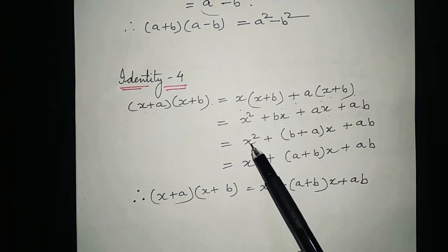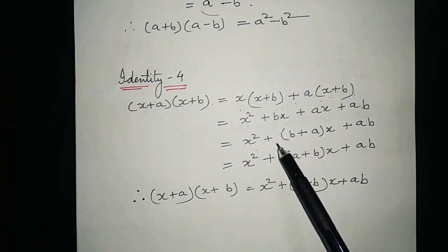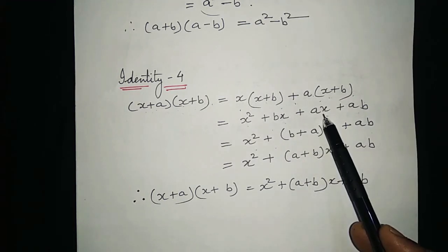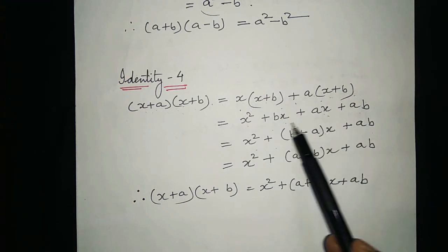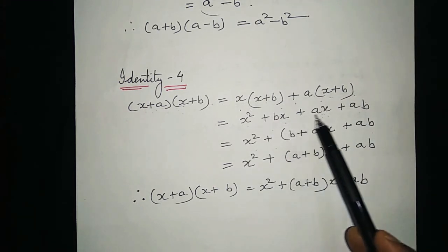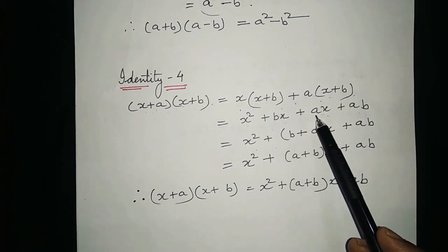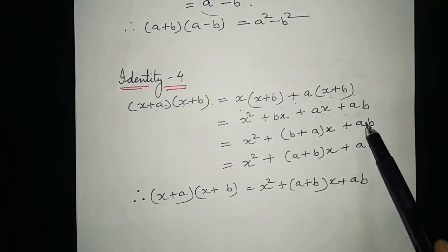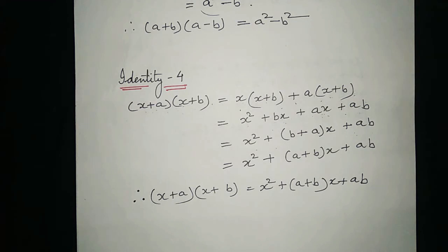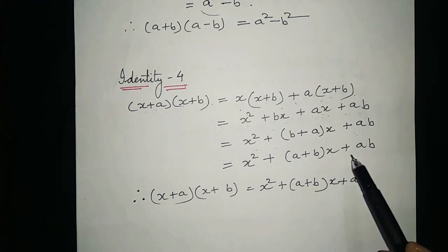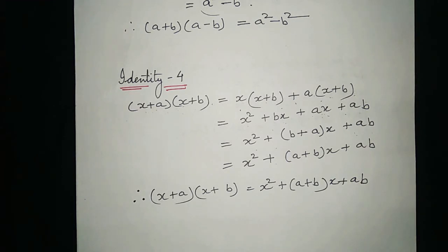In the next step we write x squared, then bx and ax are like terms with x common, so we take x outside the bracket and write b plus a inside. Then we add plus ab. The right-hand side becomes x squared plus (a plus b) multiplied by x plus ab. This completes the proof of identity 4.